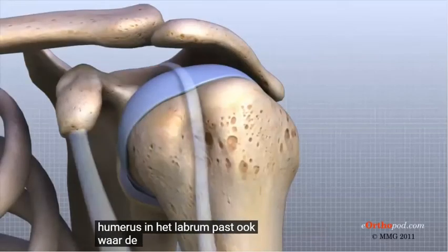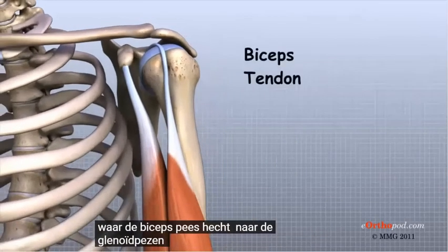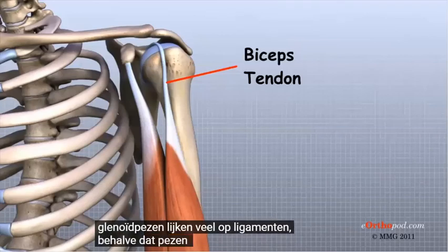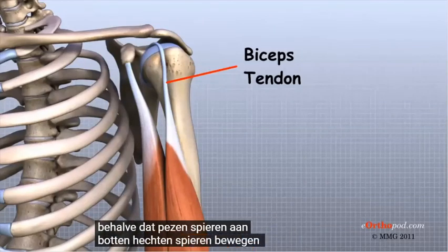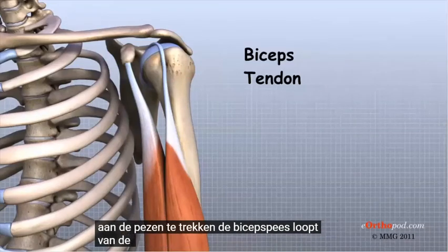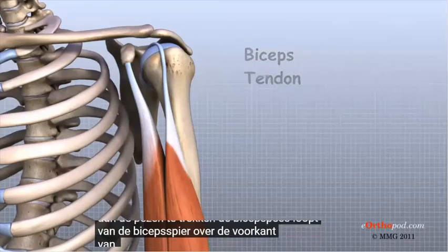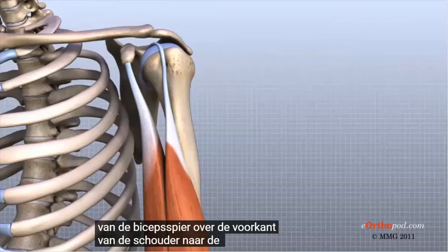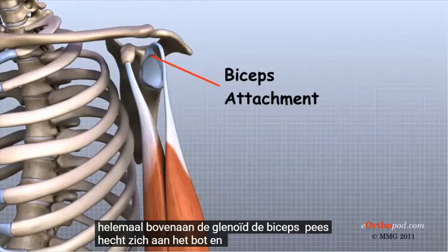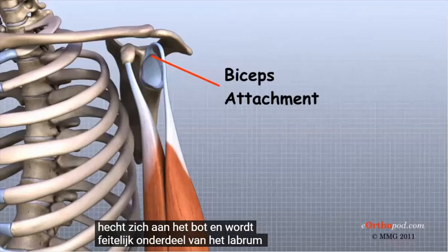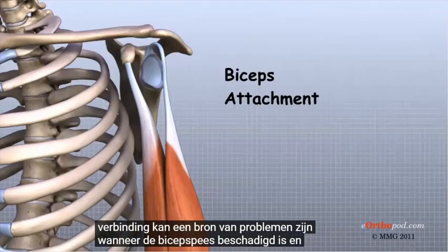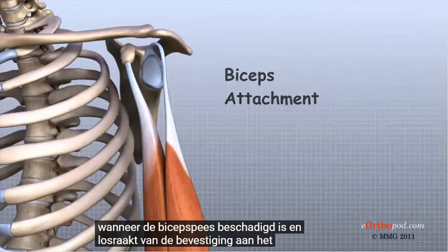The labrum is also where the biceps tendon attaches to the glenoid. Tendons are much like ligaments except that tendons attach muscles to bones; muscles move the bones by pulling on the tendons. The biceps tendon runs from the biceps muscle across the front of the shoulder to the glenoid, where at the very top it attaches to the bone and actually becomes part of the labrum. This connection can be a source of problems when the biceps tendon is damaged and pulls away from its attachment to the glenoid.